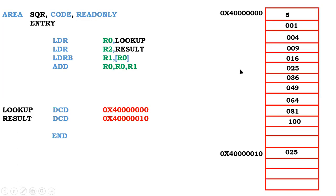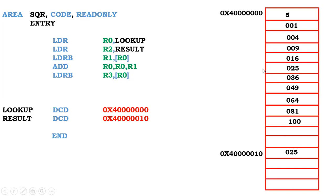After executing the ADD instruction, R0 becomes the base address offset by 5 — that is 4 followed by 7 zeros plus 5 — which points to the 5th entry in the lookup table. This is a 32-bit address. The next instruction, LDRB, loads an 8-bit value from the memory location pointed to by R0.